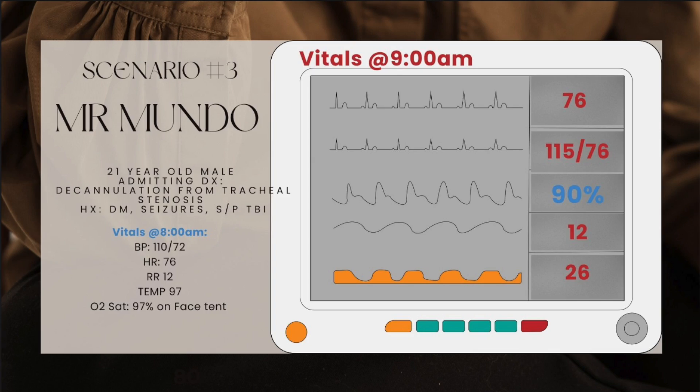At 9am vitals are: blood pressure 115 over 76, heart rate 115, respiratory rate 10, oxygen saturation 90% on face tent at 15 liters per minute. Assessing the patient, I notice that his head is hyperextended, which is not indicated — we want to avoid hyperextension of the neck and use C-spine precautions. I reposition the patient's neck and listen to the patient's lung sounds.